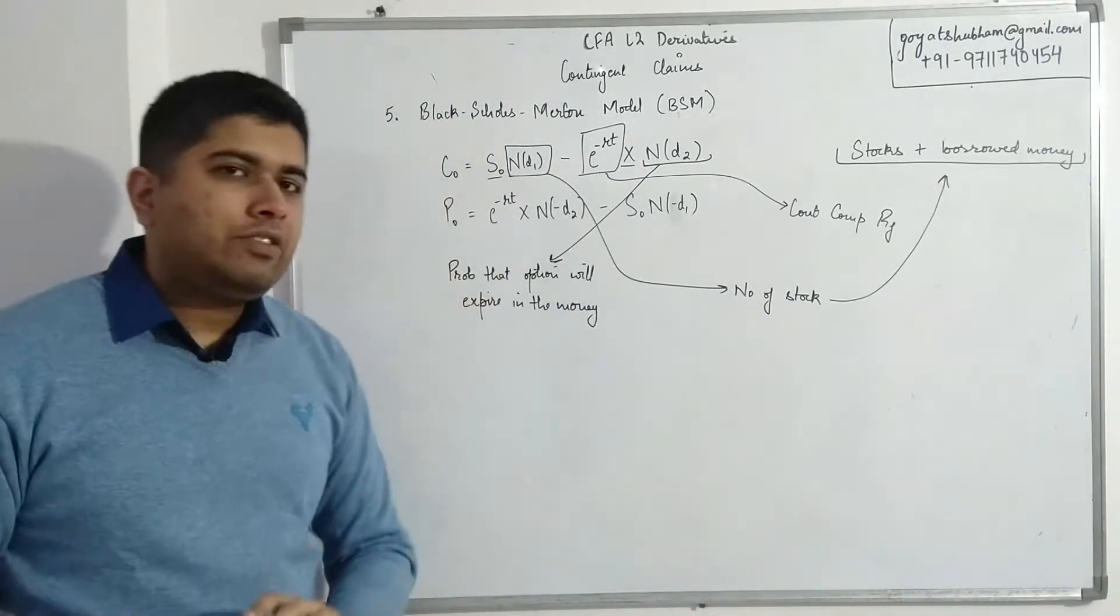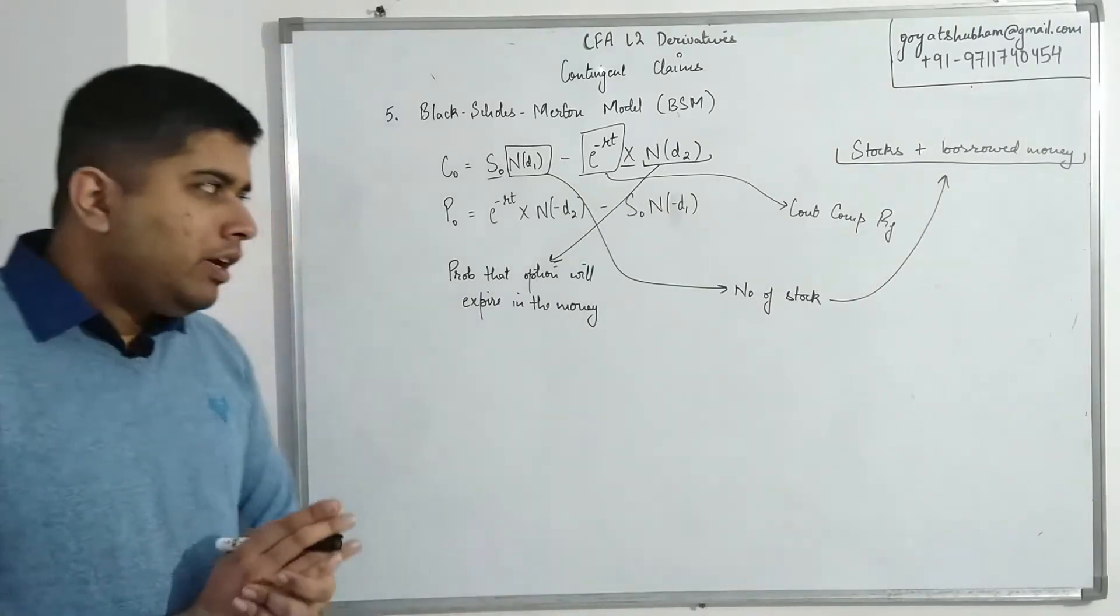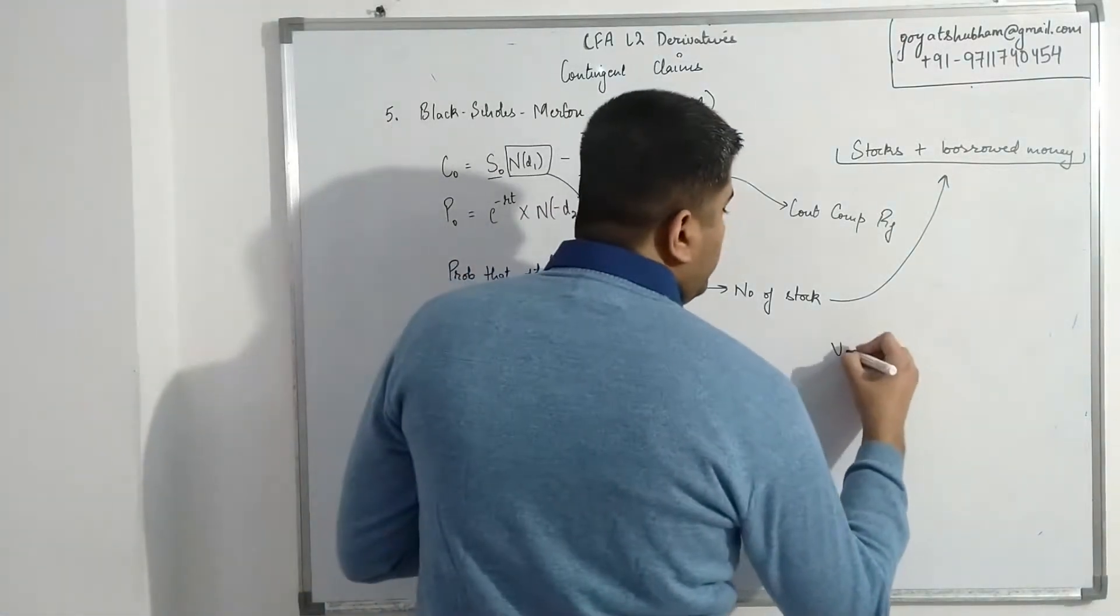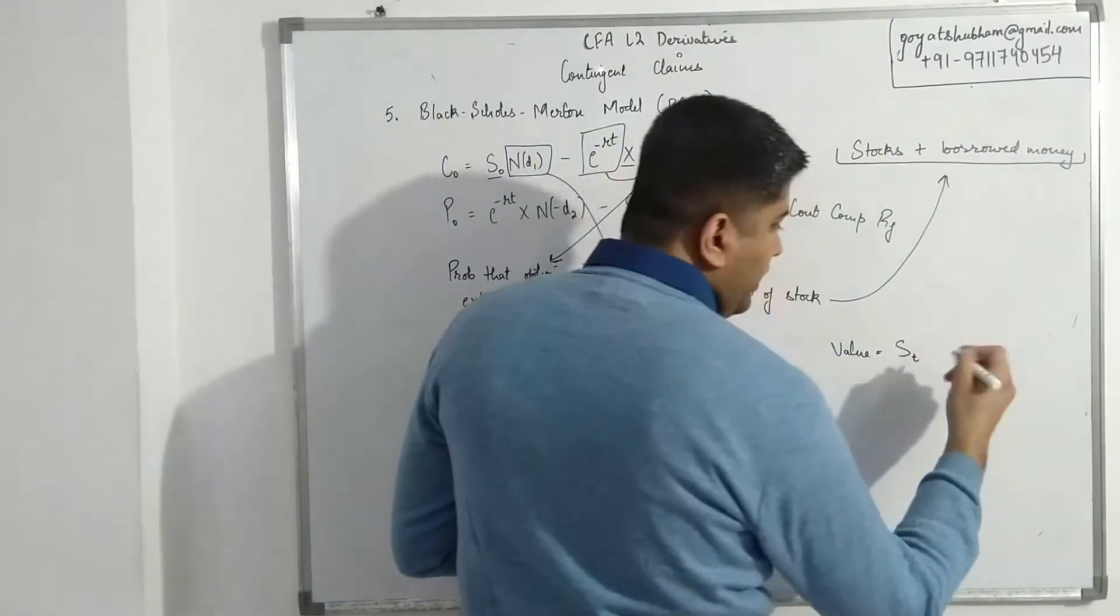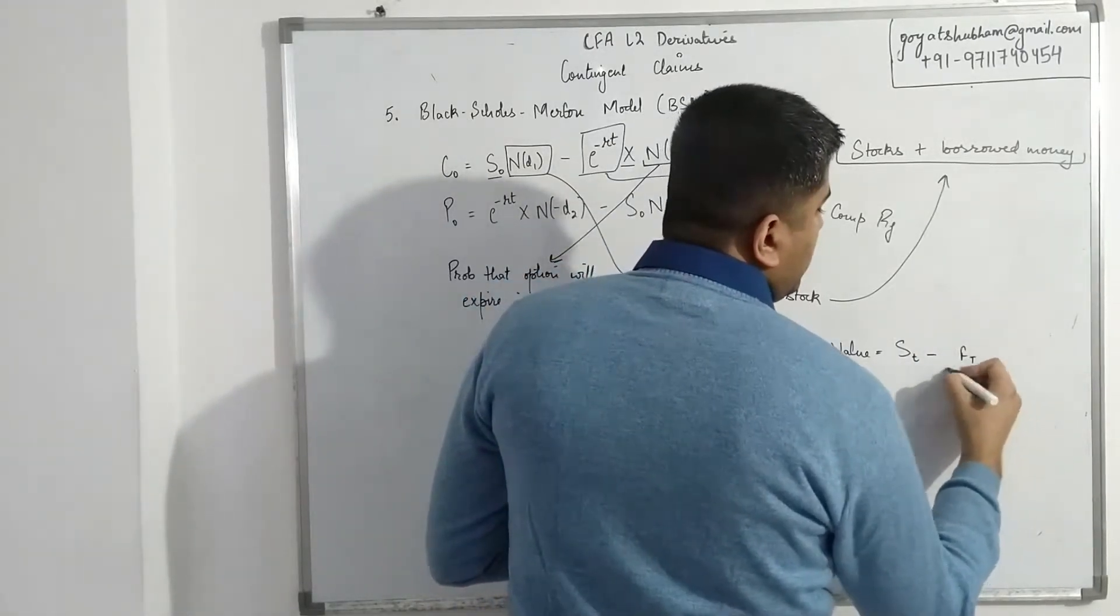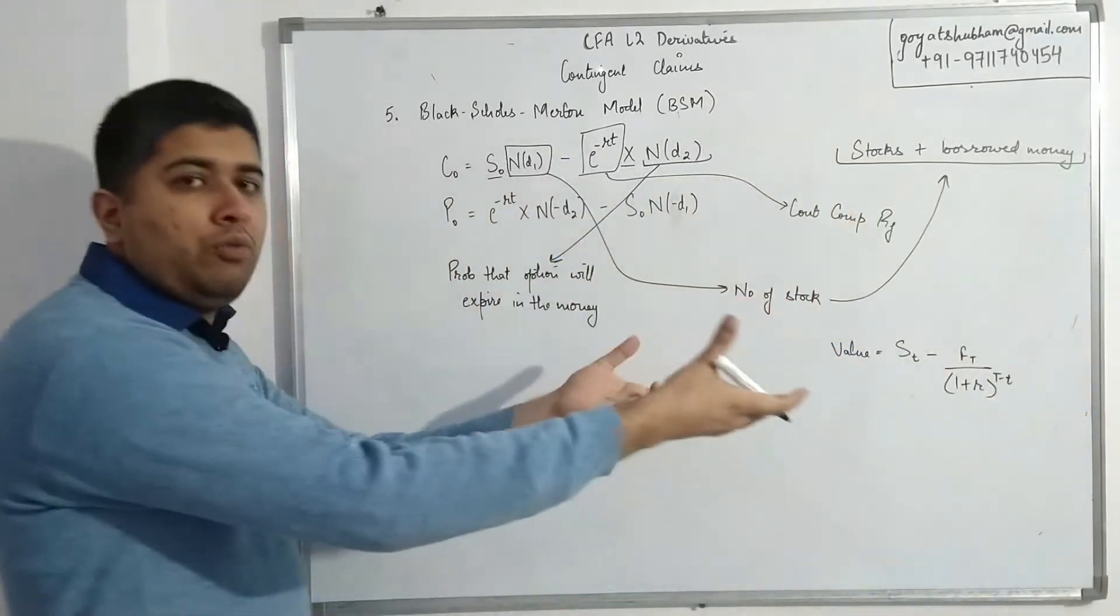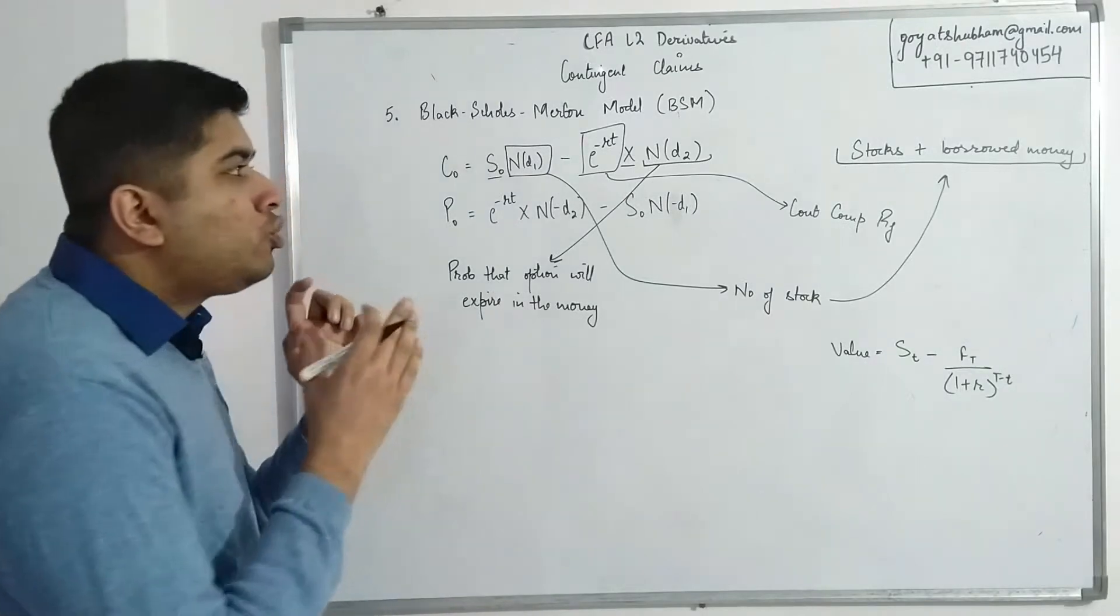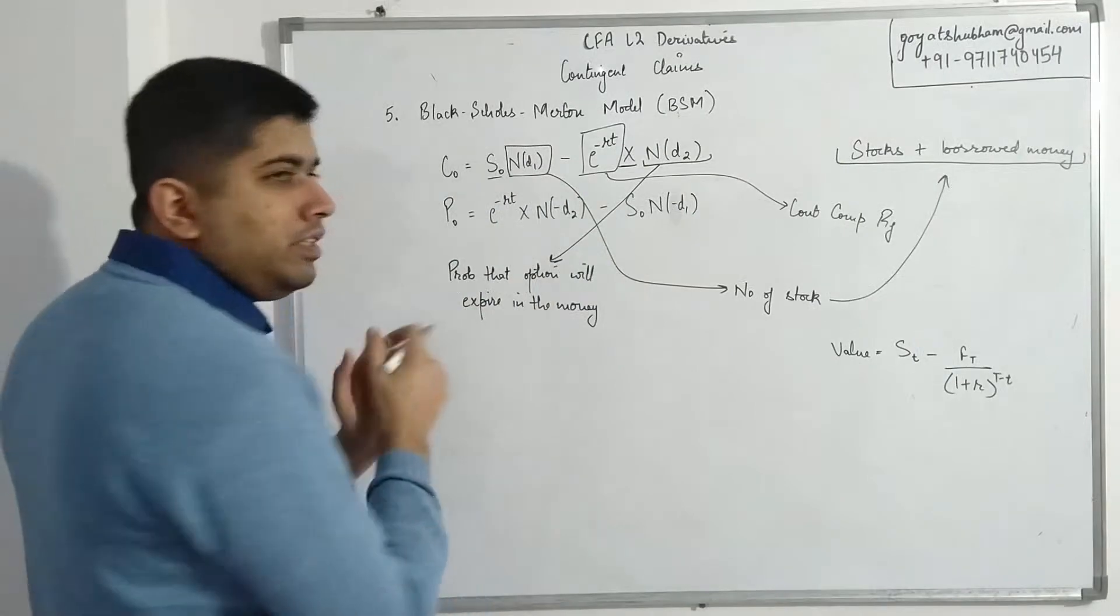Now that we know all of the unique elements of this entire equation, the next thing is how exactly is this equation giving us any information about call option or any option for that matter. If you remember when we did forwards and futures, value of forward used to be spot rate at any time t minus whatever the forward rate is, divided by e^(r(T-t)). I used to bring the forward rate back to wherever I wanted to do valuation.